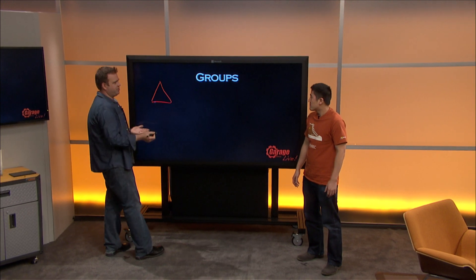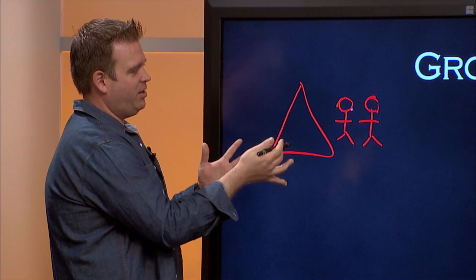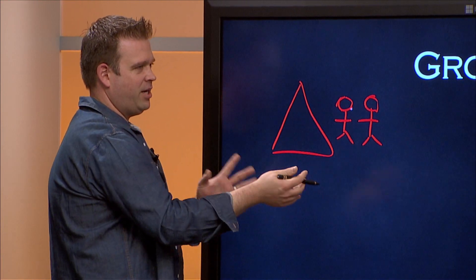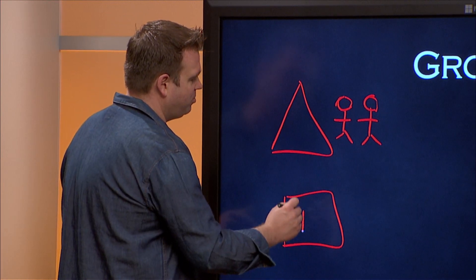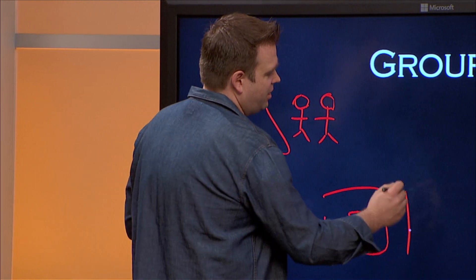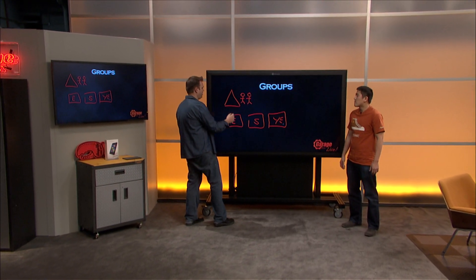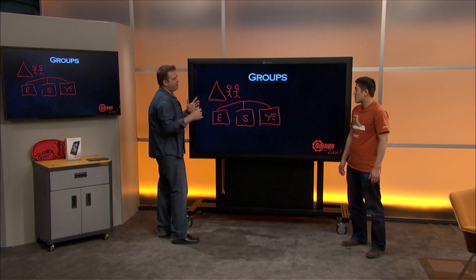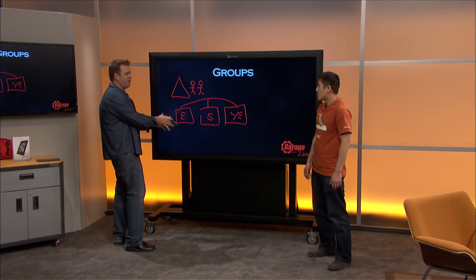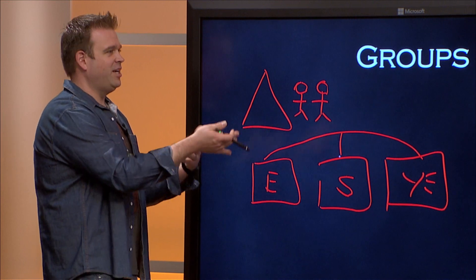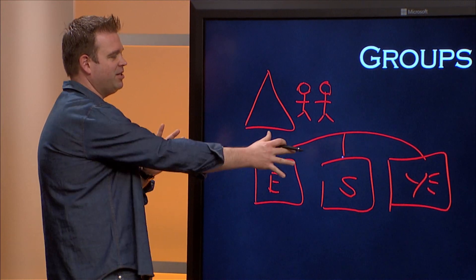Basically you have your directory service and all the people that are part of it working together. In the past, they might have been in a distribution list, or a SharePoint team site. Now we want those same groups to be represented whether you're in Exchange, SharePoint, or Yammer, because all those groups should be consistent throughout all the different ways that we want to work. From a generational perspective, if you have a team where some people prefer instant messaging, some prefer email, and some prefer Yammer and enterprise social networking, all of those different communication preferences can be met with the same grouping across all these properties.